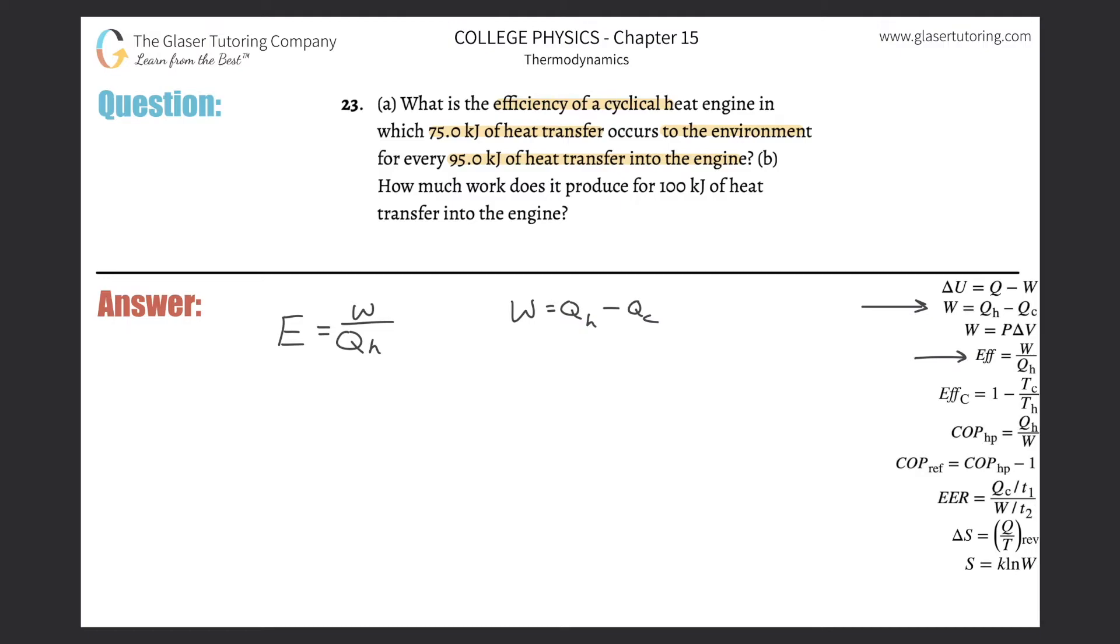So we can actually do a quick substitution here. We can simply take Q sub H minus Q sub C into the numerator, because that is the work, divided by Q sub H. And I can reorganize this if I wanted, but I'm just going to leave that alone for now.